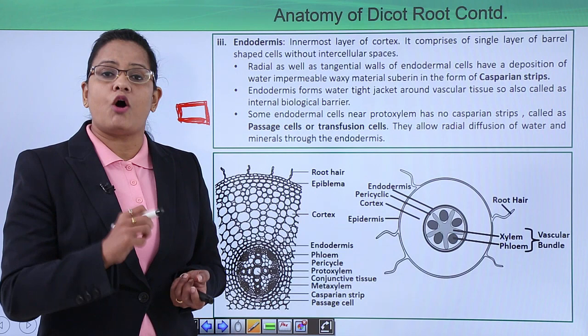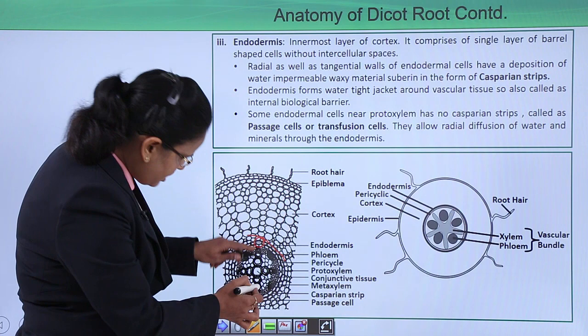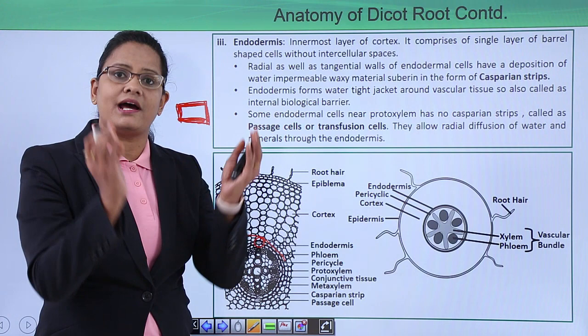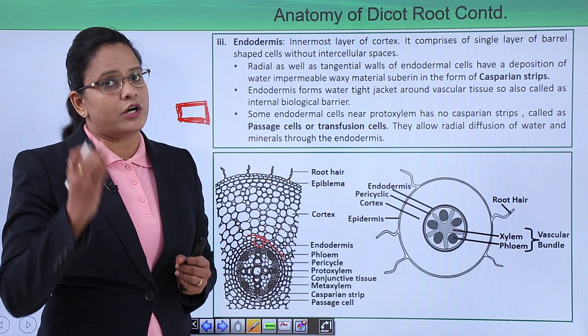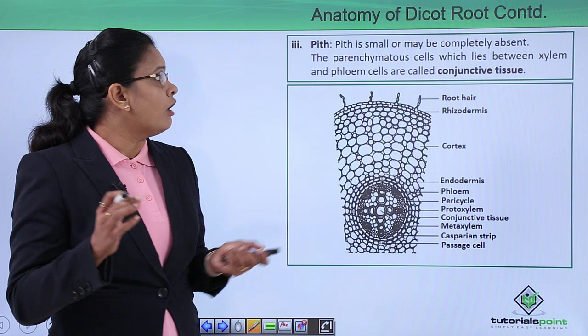Some cells of the endodermis are located right above the protoxylem. As you can see in the diagram, these cells are known as passage cells or transfusion cells. The main feature of these cells is that they do not have Casparian strips. Since the thickening is absent, their function is radial conduction of water. So passage cells or transfusion cells help in radial conduction of water.